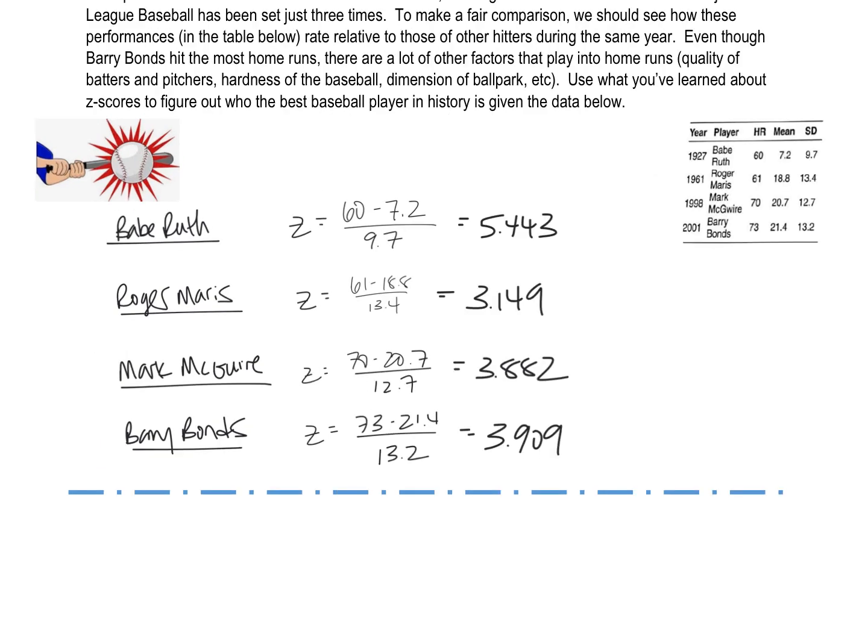And so here's what all those numbers crunched end up looking like. You can verify by using your own calculator. But it does appear as though Babe Ruth is the big winner. He is more than five standard deviations above average, where the other guys only have Z-scores in the threes.